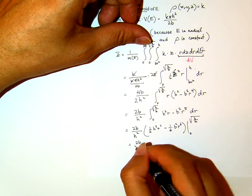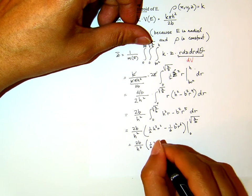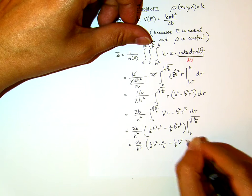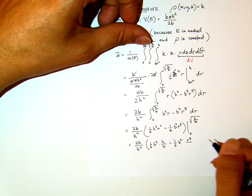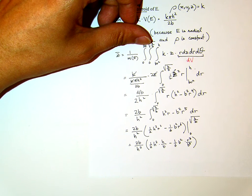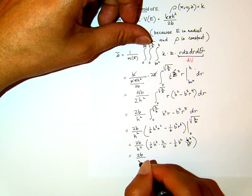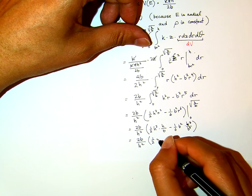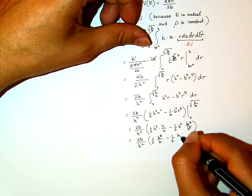Let me plug it in first. So, this is 1 half H squared times H over B minus 1 6th B squared times r cubed over B cubed. So, this is 2B over H squared, 1 half H cubed over B minus 1 6th H cubed over B.